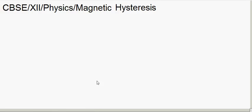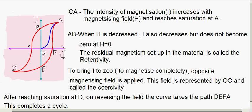In today's session we will learn about magnetic hysteresis. Hysteresis means lagging behind. In magnetism, the hysteresis curve is a plot between I and H, where I is the intensity of magnetization and H is the magnetizing field. The curve plotted between I and H is known as the hysteresis loop.